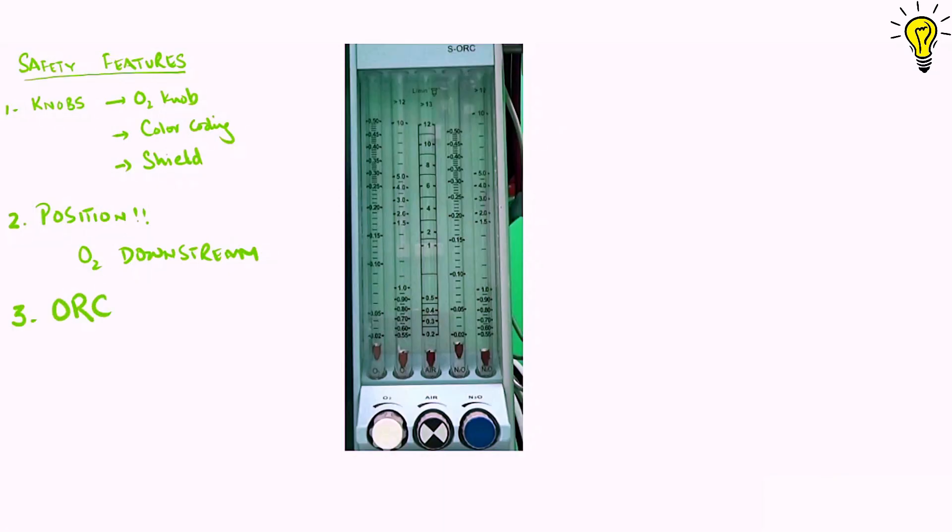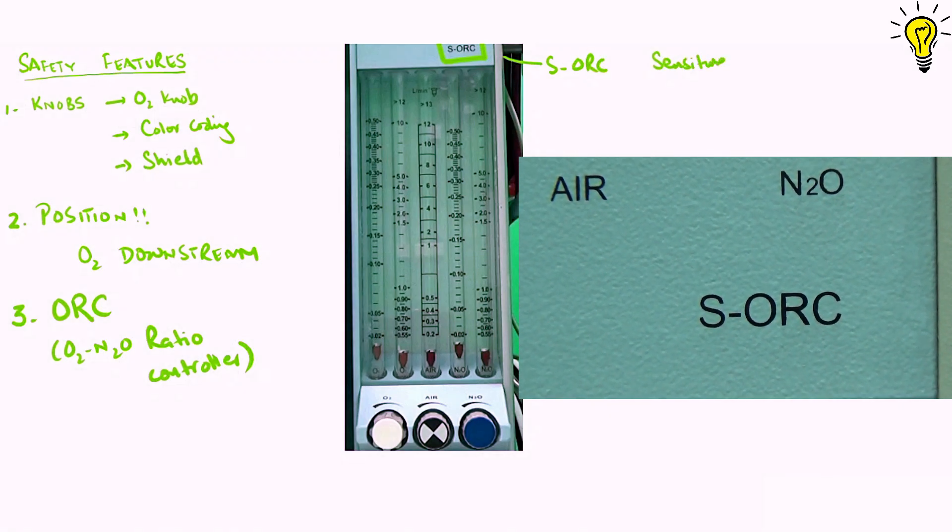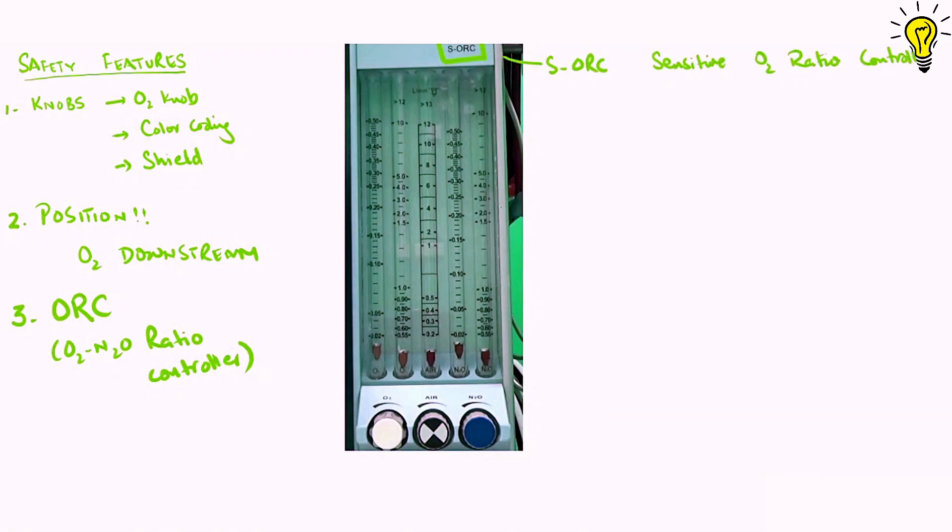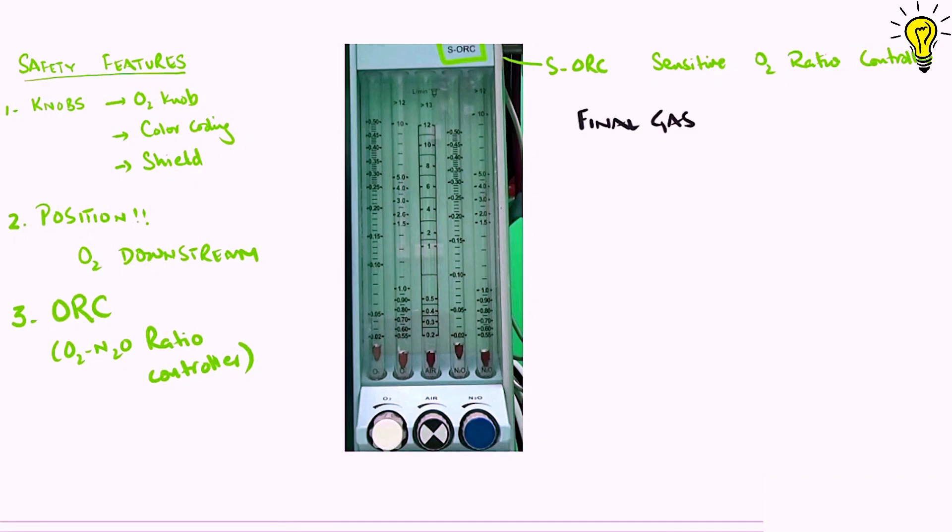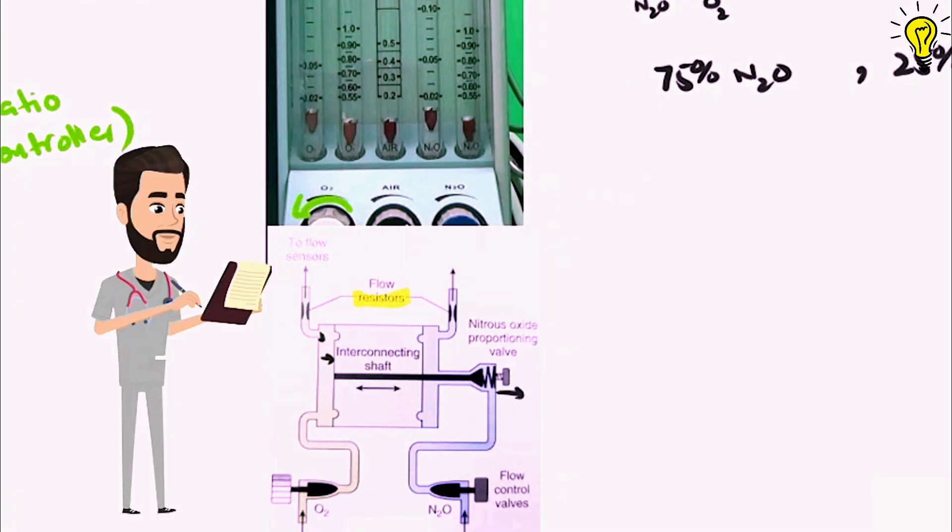The final safety feature is my favorite one. It's very witty, very intelligent. The ORC or oxygen nitrous oxide ratio controller. Now you can see on this Dragger machine, it is written SORC meaning sensitive oxygen ratio controller. The ORC in any machine ensures the final gas output should have at least 25% oxygen fraction. It ensures that this mixture of oxygen and nitrous at minimum 3 ratio 1. In simple terms, 25% of the mixture should be oxygen at all cost. So how does it do it? Let's see how SORC of Dragger has done it.